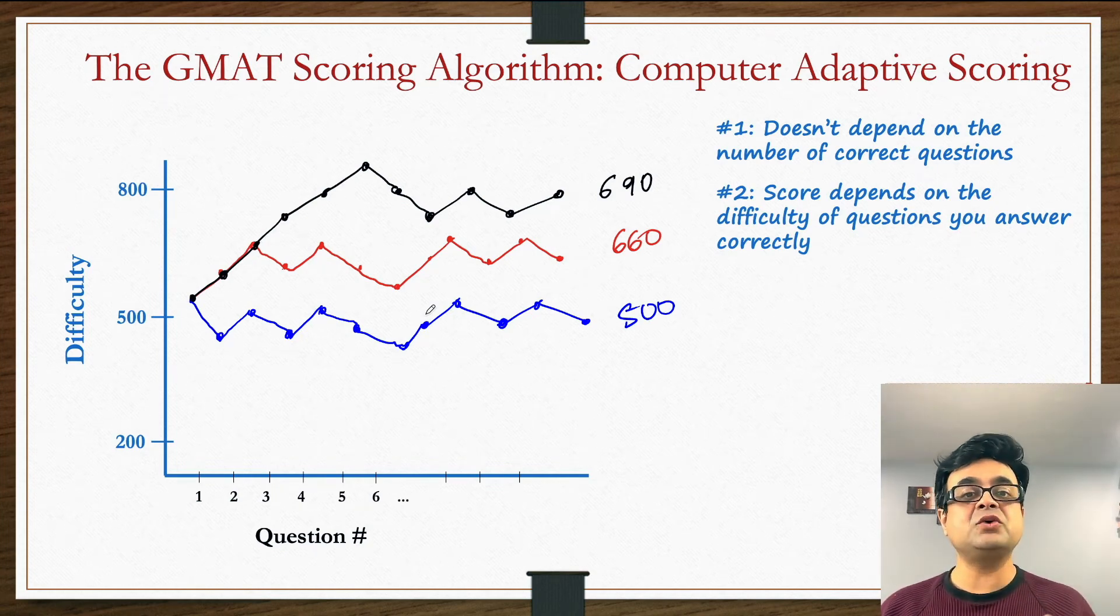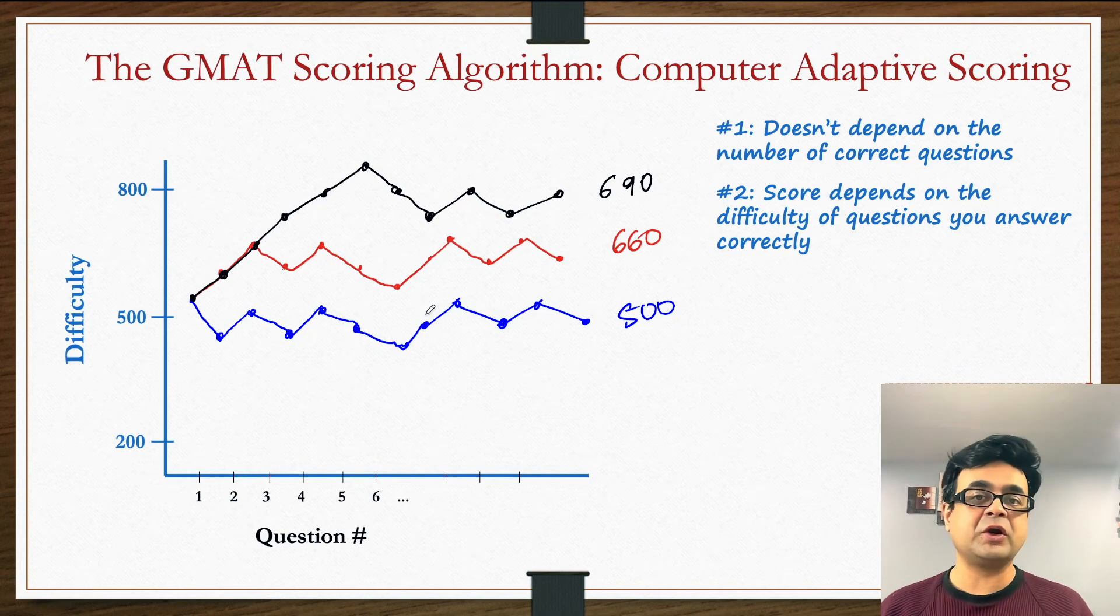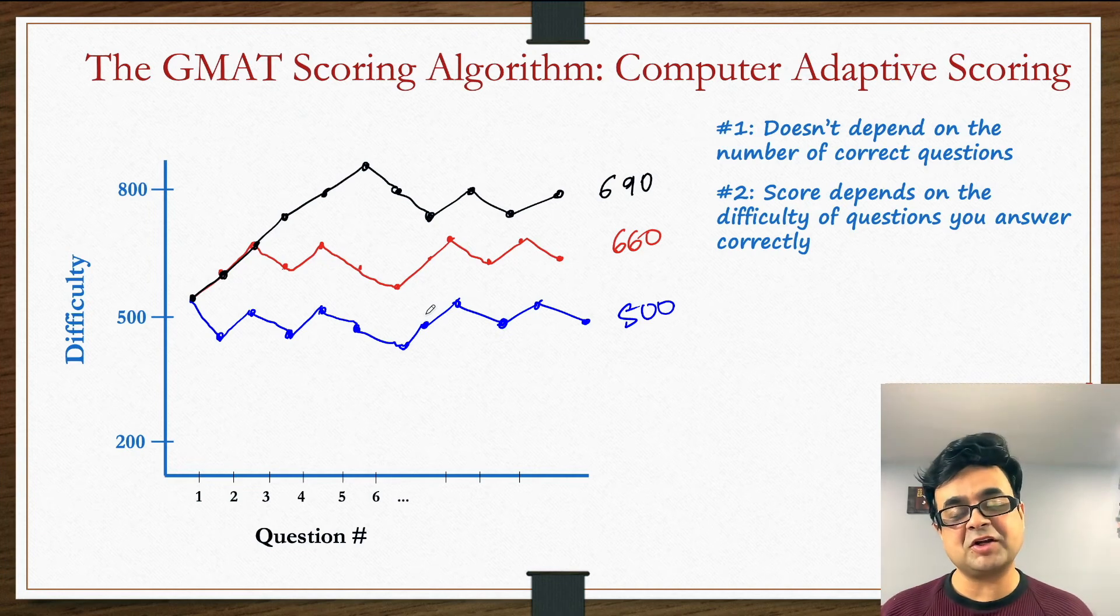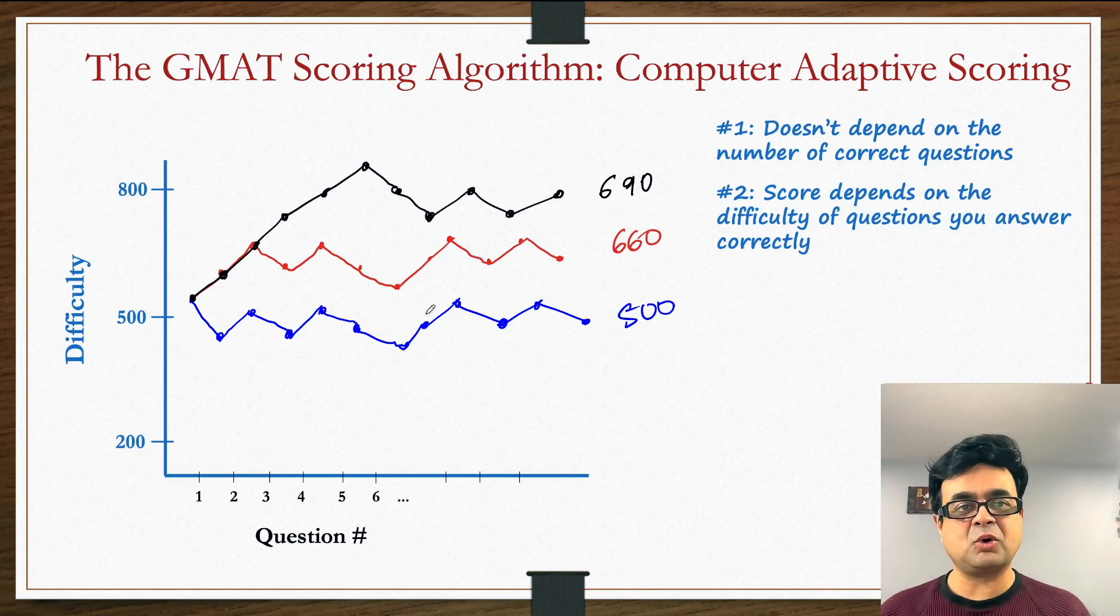Remember, if you leave any question unanswered in GMAT, that counts as zero difficulty question and you get heavily penalized for it. The best strategy towards the end is if you don't have enough time, make sure you complete the test and mark every question by guessing. So yes, first 10 questions are more important.